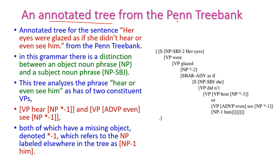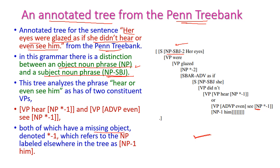Here is an annotated tree from the Penn Treebank for the sentence: 'Her eyes were glassed as if she did not hear or even see him.' In this annotated tree, there is a distinction between object noun phrases and subject noun phrases. Object noun phrases are represented simply as NP, while subject noun phrases are represented as C-NP or S-NP. Missing objects are denoted by NP* or NP*-1, indicating one or two object noun phrases are missing.